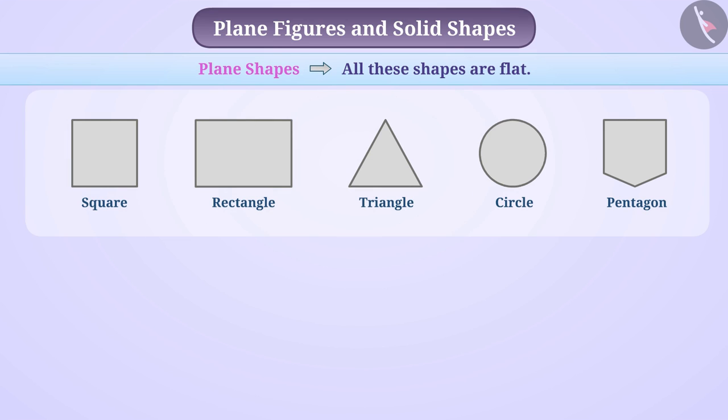A plane shape has two dimensions, length and breadth. So, these are called two-dimensional shapes. In short, these are called 2D.